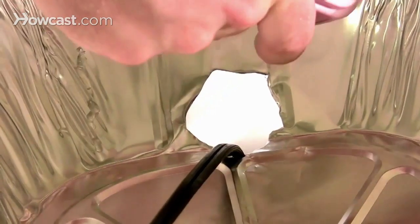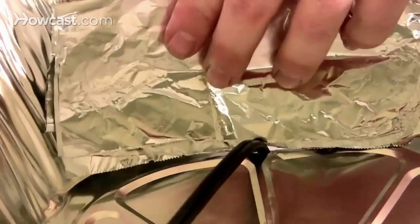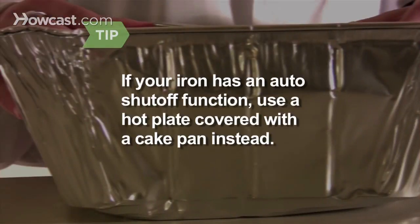Seal the open gaps of the hole using aluminum foil and hot glue. If your iron has an automatic shut-off function, use a hot plate instead. Cover it with the cake pan and leave out the gravel.